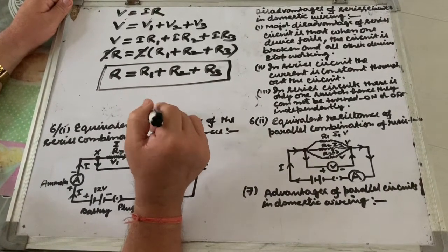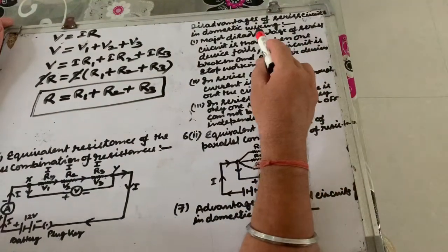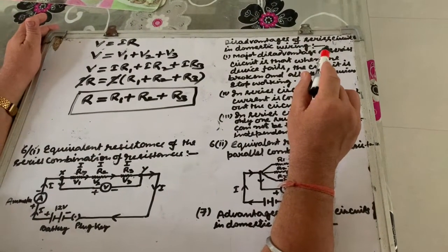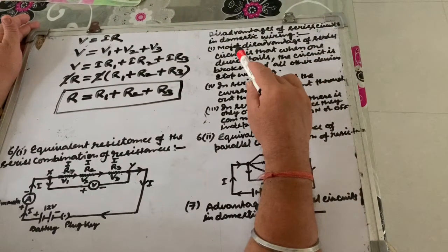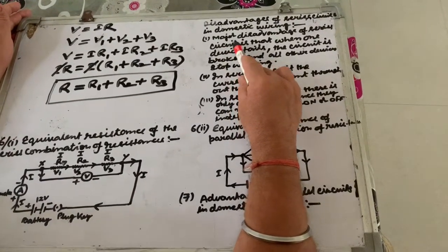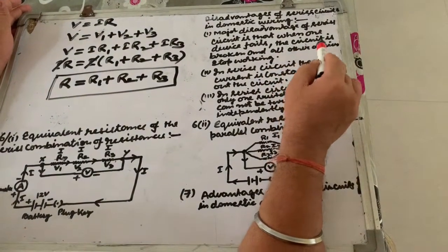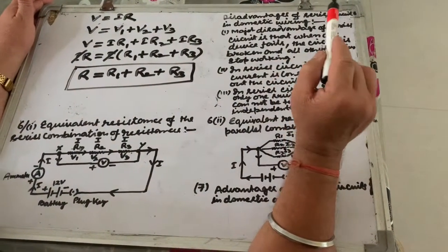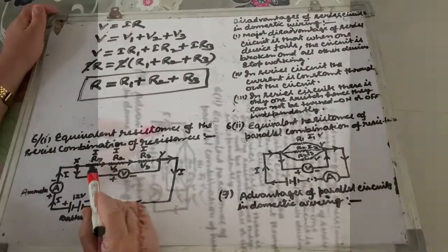A major disadvantage of the series circuit in domestic wiring is that when one device fails, the circuit is broken and all other devices stop working.